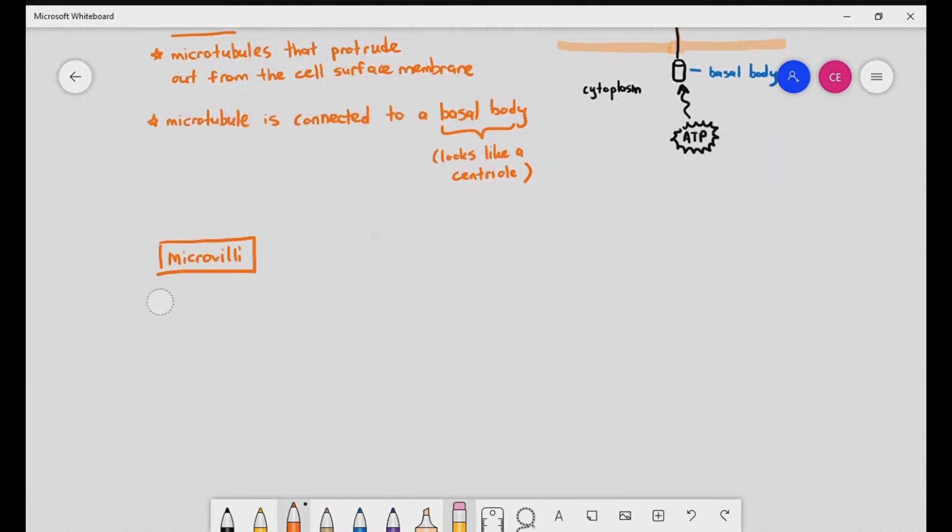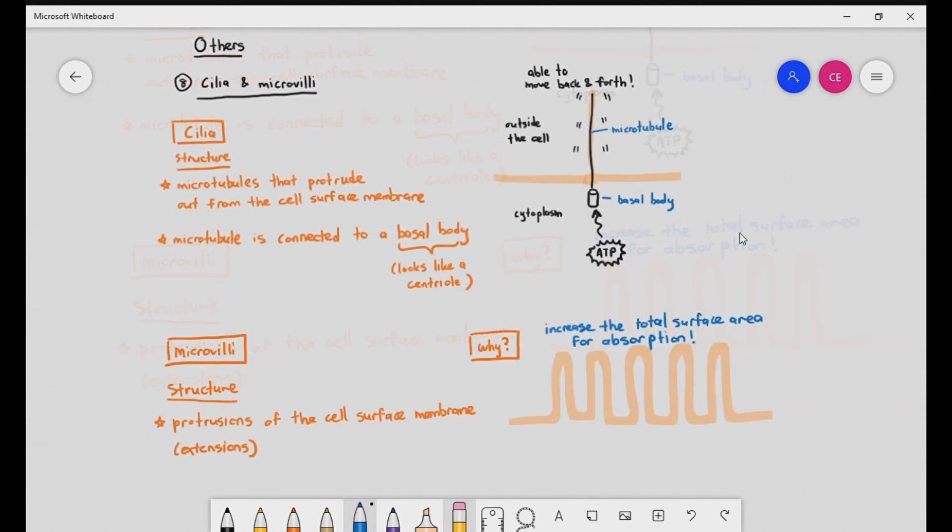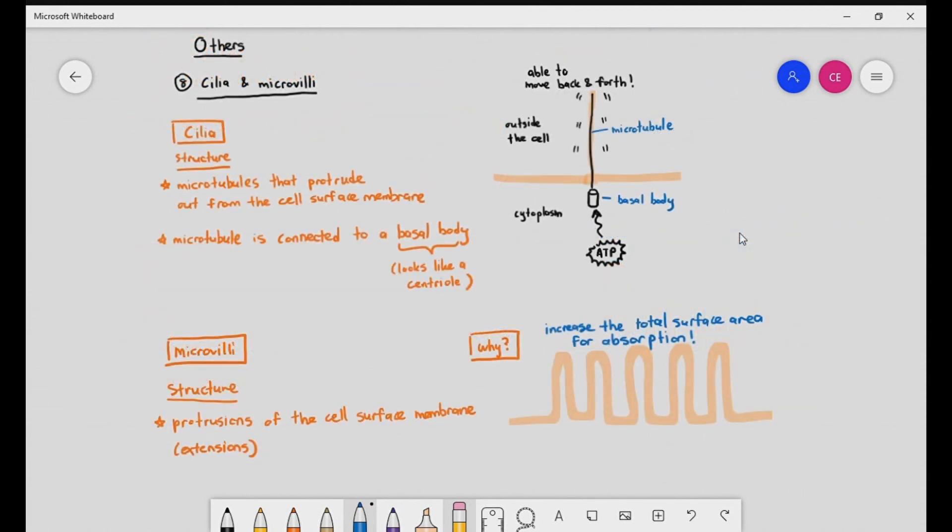Microvillus, however, is the protrusion of the cell surface membrane, or the extension or projection of the cell surface membrane, where it comes outwards. The main purpose of microvilli is not for movement, but to increase the total surface area for absorption. Cilia basically produces a type of movement. Microvilli is just there to increase surface area for absorption. They are two different things.